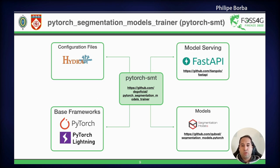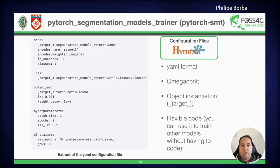PyTorch Segmentation Models Trainer is a framework built on top of PyTorch and PyTorch Lightning. It serves models using FastAPI. The models can be implemented using SegmentationModelsPyTorch, which is an open source library that has several pre-trained weights and pre-implemented model architectures. This framework uses Hydra configuration files in YAML format and uses OmegaConf to perform object instantiation. For instance, there is a model tag which has the target value pointing to the SegmentationModelsPyTorch UNet object with all its parameters.